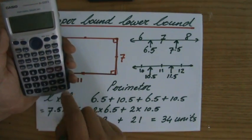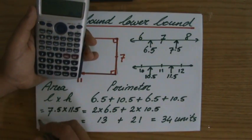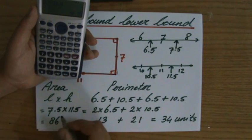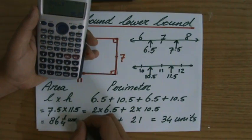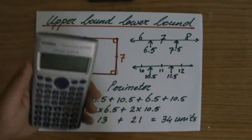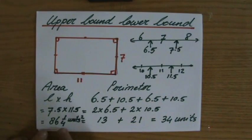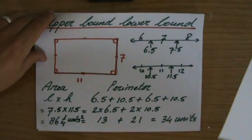I'll use my calculator: seven point five times eleven point five equals eighty-six and a quarter units squared. So the upper bound of the area is eighty-six and a quarter square units.